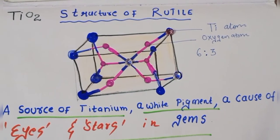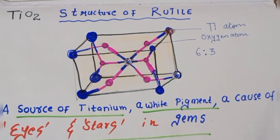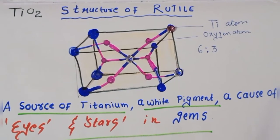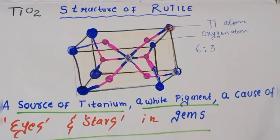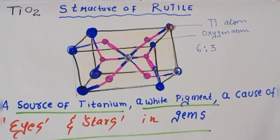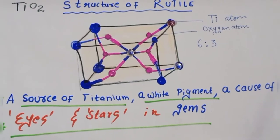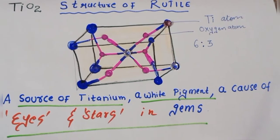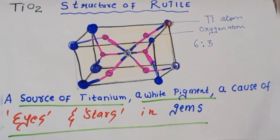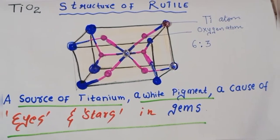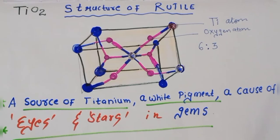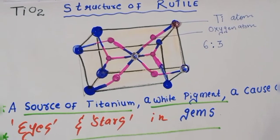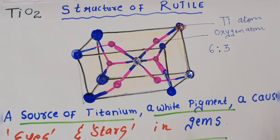Rutile is a mineral oxide composed of titanium dioxide, TiO₂. In this video we will study the detailed structure of rutile. Generally, rutile is a source of titanium, it's a white pigment — TiO₂ — and it is a cause of 'eyes and stars' in gems.